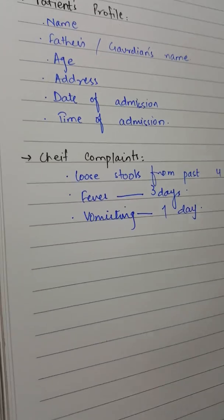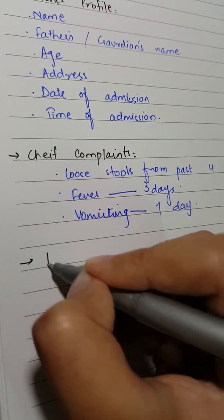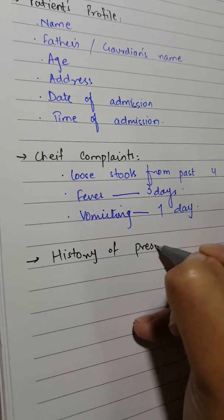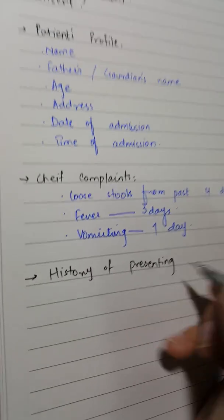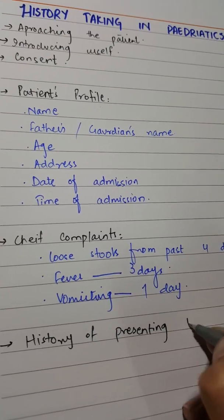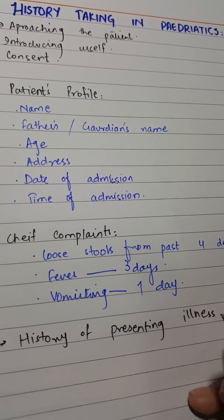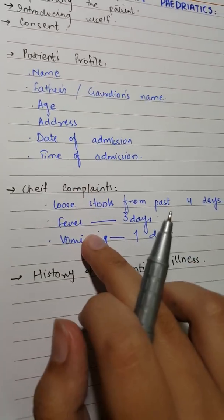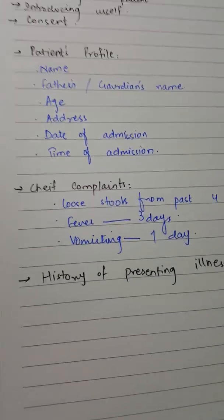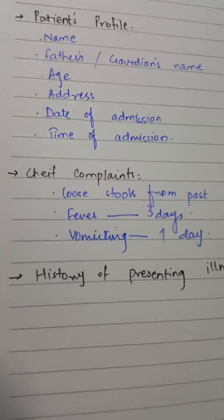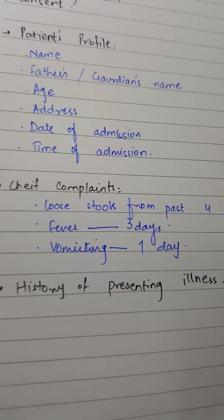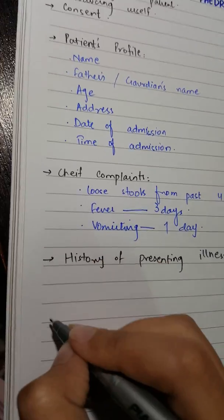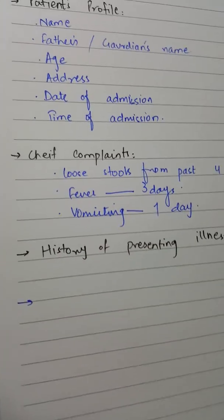After this, the next heading is HOPI, or history of presenting illness. In this, you are going to ask the patient about the diseases or symptoms that he or she told you first. The major points of these symptoms will be discussed in the next videos, and after this you are going to ask for past history.